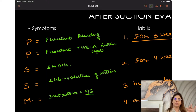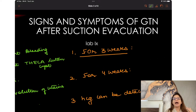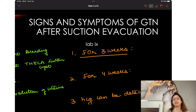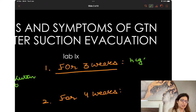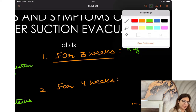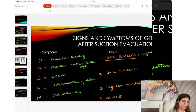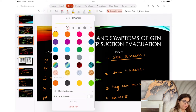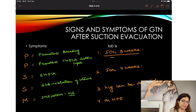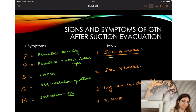If you are getting any of these five symptoms, suspect that your patient has developed GTN. For lab investigations: after molar pregnancy evacuation, you do weekly HCG levels. Suppose for 3 weeks I check HCG levels and I see that HCG levels are increasing instead of decreasing.